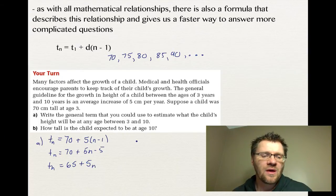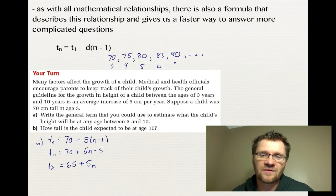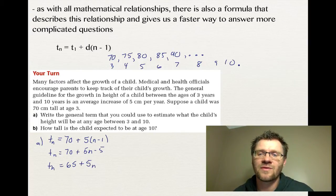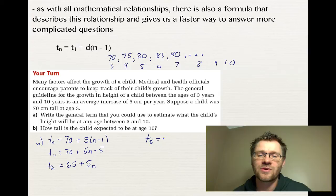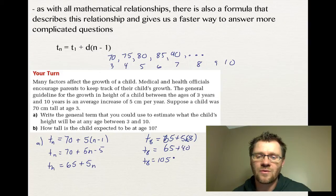The question asks: how tall is a child expected to be at age 10? We need to determine which term corresponds to age 10. Labeling: age 3 is the 1st term, age 4 is the 2nd, and so on — age 10 is the 8th term. So t8 = 65 + 5(8) = 65 + 40 = 105 centimeters. A child aged 10 should have a height of 105 cm.